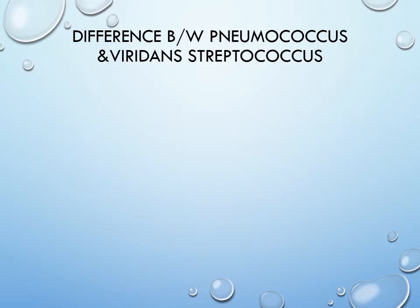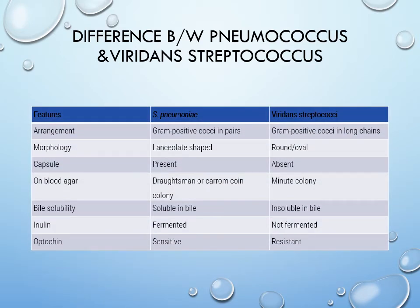S. pneumoniae shows alpha hemolysis — partial hemolysis — causing a greenish discoloration on the blood agar plate. Another bacterium, the viridans group, is also present as a commensal in our oral flora and is also alpha-hemolytic, so we must know the differences. S. pneumoniae are gram-positive cocci in pairs with a lanceolate shape, whereas viridans streptococci are in long chains and oval or round. A capsule is present in S. pneumoniae and colonies show a draughtsman or carom-coin appearance, whereas the viridans group has minute colonies. S. pneumoniae is soluble in bile, so a bile solubility test can be performed on a plate or in a tube.